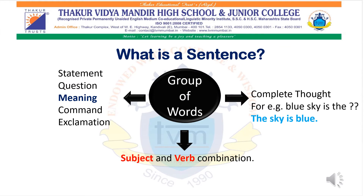Before we start with our topic today, let's know what is a sentence. A sentence is a group of words which consists of a complete thought, with a combination of subject and verb, and also a meaningful expression. For example, 'blue sky is there' doesn't make any sense at all. While 'the sky is blue' gives us a complete thought, and we can see in that sentence the subject and verb are present.